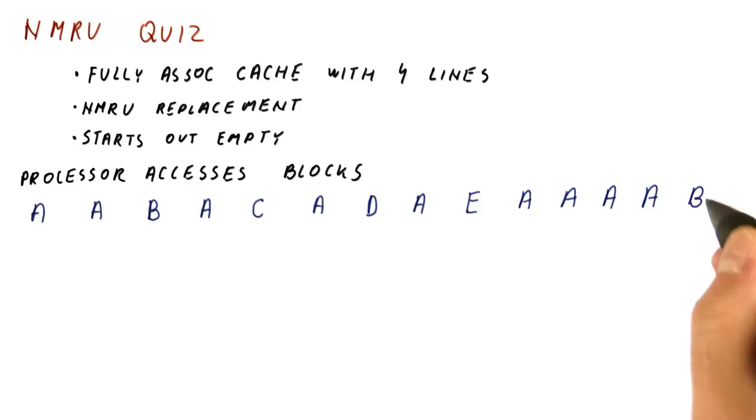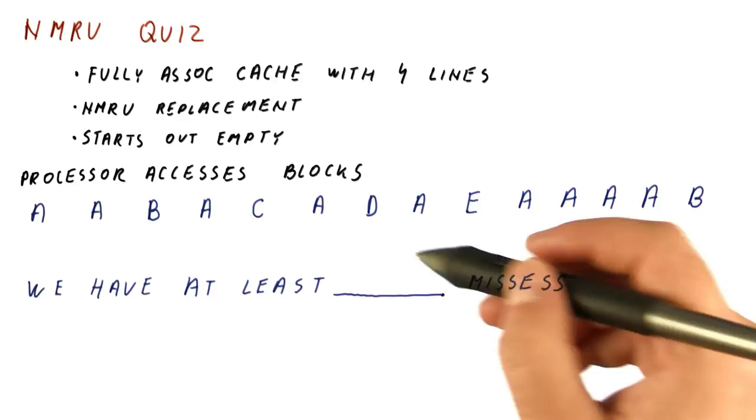The question for you: what's the smallest number of cache misses we will have on this sequence of accesses, and what's the largest number of cache misses that we might have on these accesses?